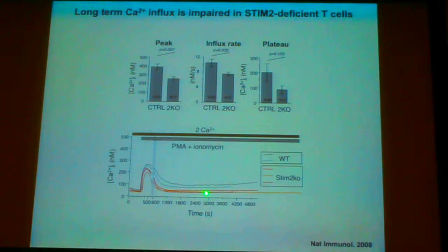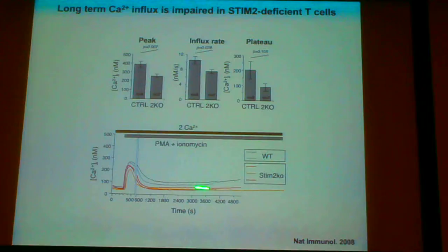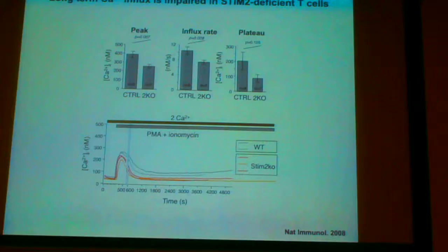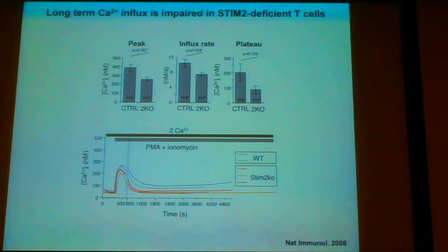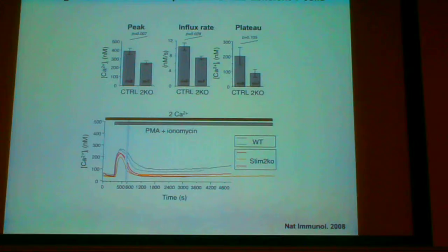Here you can see the colored lines — the basal calcium level is lower than the control calcium concentrations. This data suggests that STIM2 plays an important role in the maintenance and sustenance of calcium influx, rather than triggering the initial calcium influx.